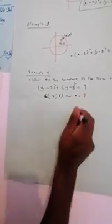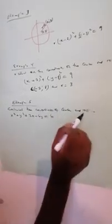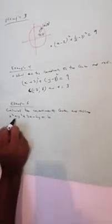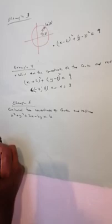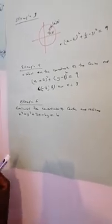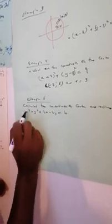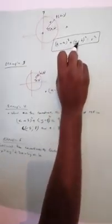In Example 5, they say: calculate the coordinates of the center and its radius, given x squared plus y squared plus 2x minus 6y equals 6. We know that to find the coordinates we must get it on the standard form: x minus a squared plus y minus b squared equals r squared. But here we have x squared plus y squared plus 2x minus 6y, so we must complete the square.